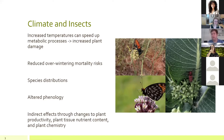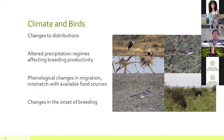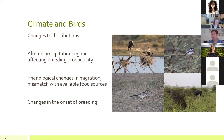Moving on to climate and birds: we again see changing distributions and altered precipitation regimes affecting breeding. Phenological changes mostly occur during migration, and this can cause what we know as a phenological mismatch — where birds may be showing up later and missing the peak hatch of a crucial insect species that serves as a mainstay food source.